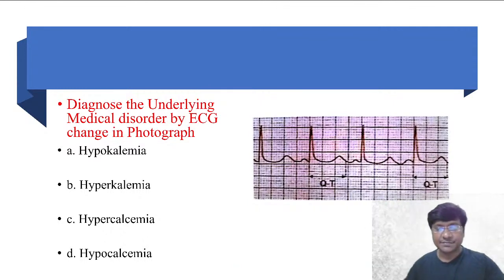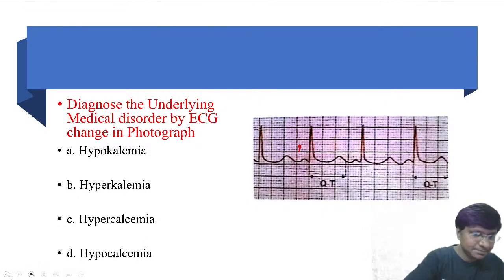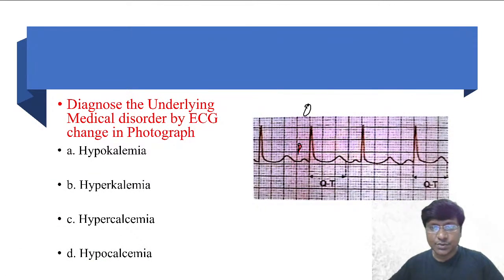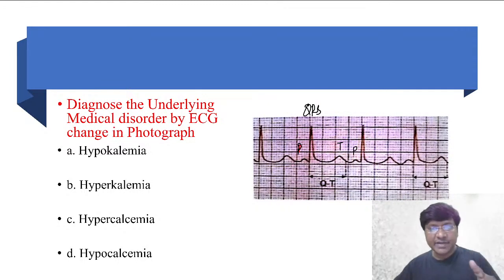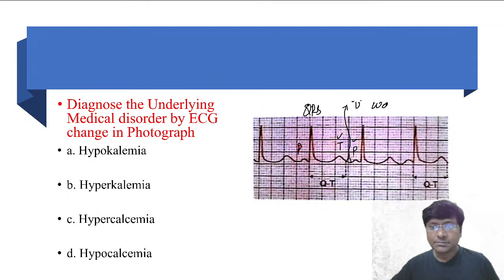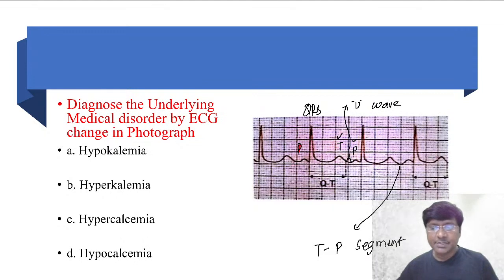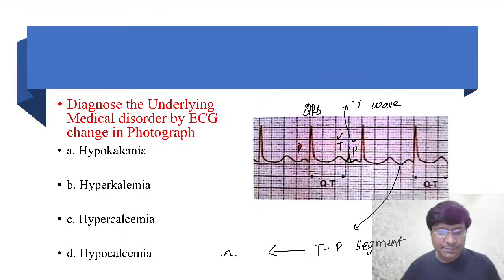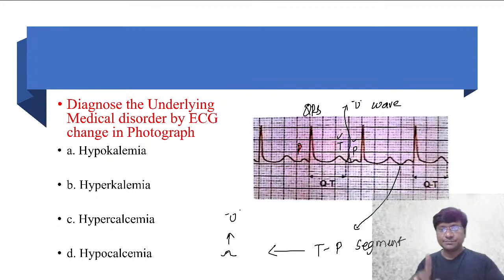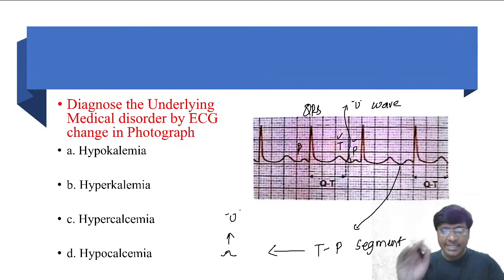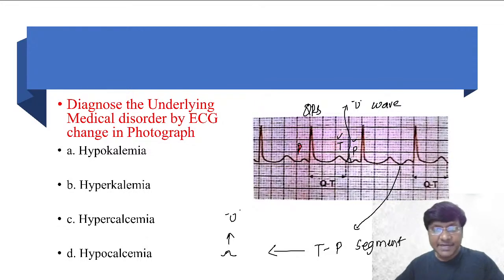How to differentiate a U wave from a subsequent P wave? Normally after the T wave you have the TP segment, then the P wave. In the TP segment — between the T wave and the P wave — if there is any small positive deflection, that is your U wave. Normally you don't have a U wave. After the T wave, any positive wave following the TP segment would be the P wave. But if there is an additional positive deflection between the T wave and the P wave, that becomes your U wave.